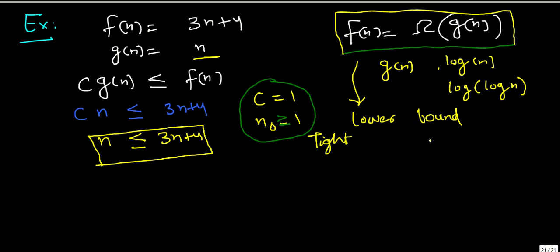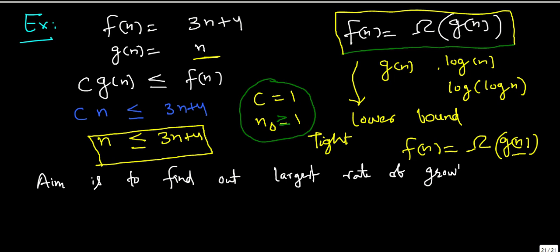So we can always say that F(n) is equal to Omega of G(n) for all the functions which are lesser than G(n), but our aim here is to find out the largest rate of growth, that is G(n), which is less than or equal to the given algorithmic rate of growth, that is F(n).